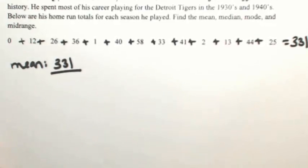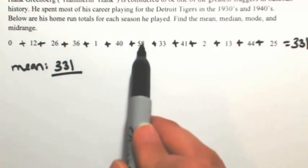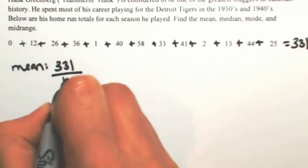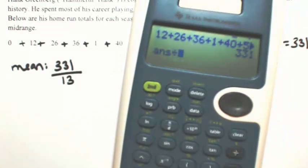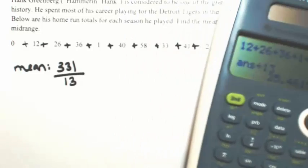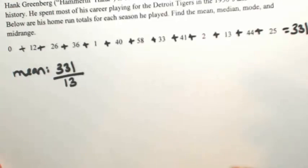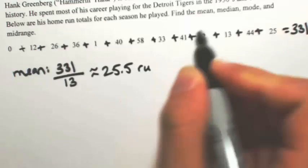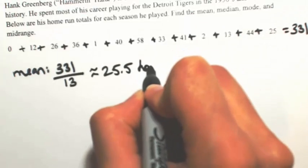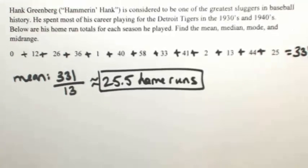So now we're going to take that and divide it by the total number of seasons that he played — 13 seasons. So 331 divided by 13. His average, to one decimal place, is about 25.5 home runs for every season. So that's the mean.